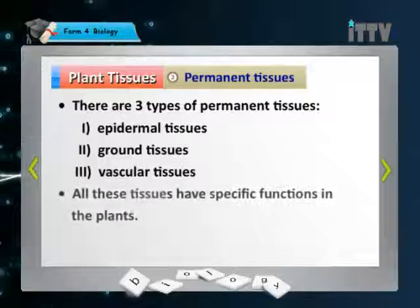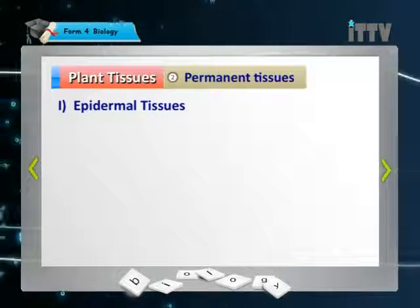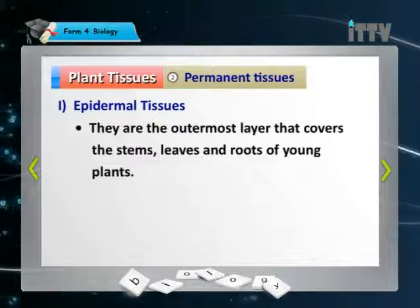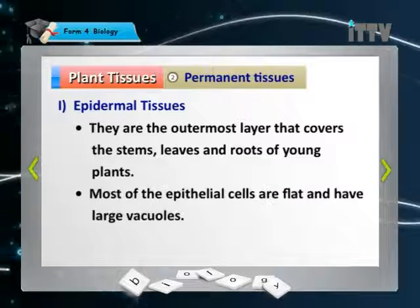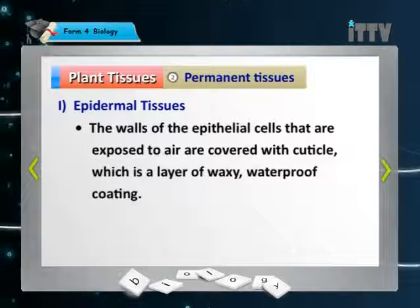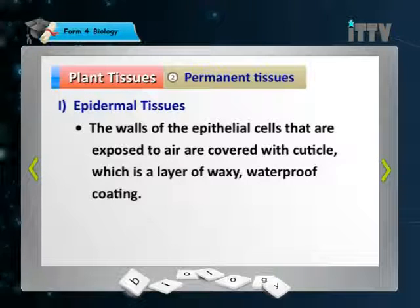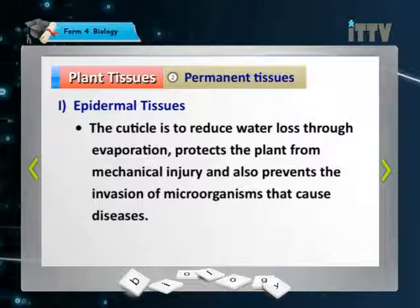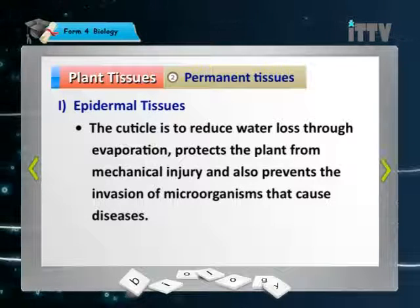All these tissues have specific functions in a plant. Let's take a look at epidermal tissue. As you know, epidermal means the skin. These are the outermost layer that covers the stems, leaves, and roots of all young plants. Most of the epidermal cells are flat and have large vacuoles.